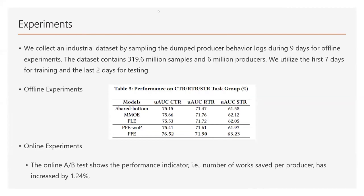We collect an industrial dataset from Kuaishou by sampling the dumped producer behavior logs during nine days for offline experiments. The dataset contains about 320 million samples and 6 million producers. We utilize the first seven days for training and the last two days for testing. In offline experiments, we report the AUC performances on CTR, RTR, and STR tasks, and our PFE outperforms others in this industrial scenario as well. In online experiments, we deploy it on a real-time data engine with 20% serving traffic for 10 days. The A/B test shows the number of works saved per producer increased by 1.24%.